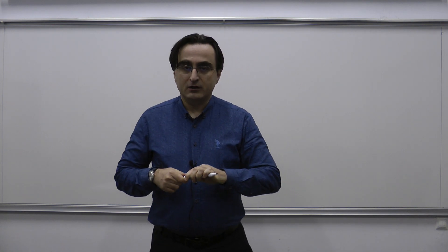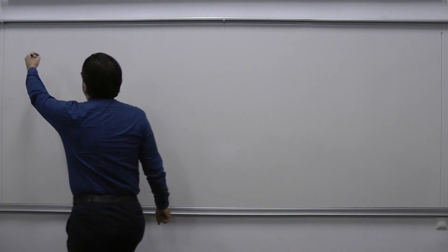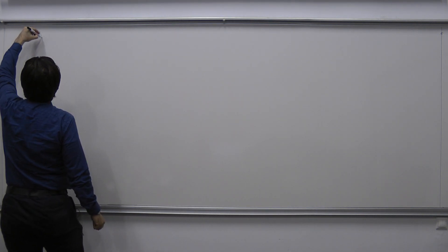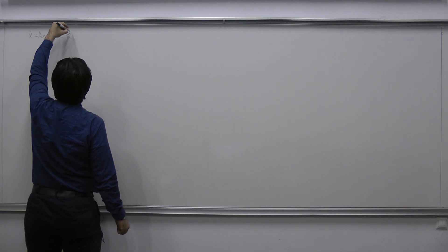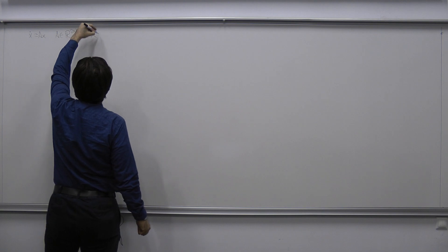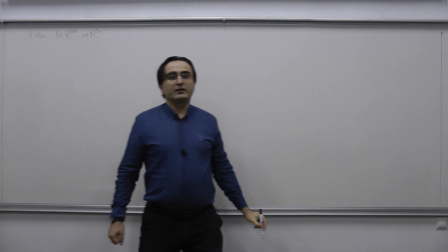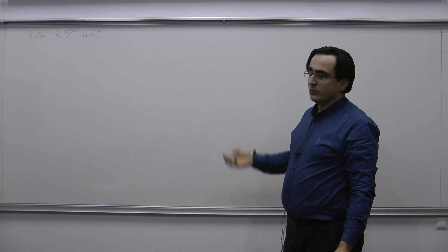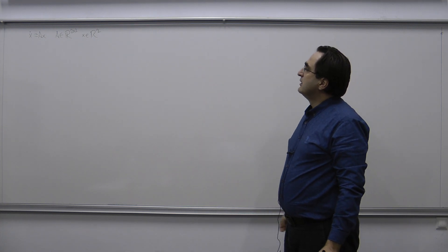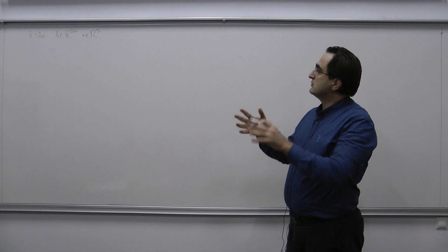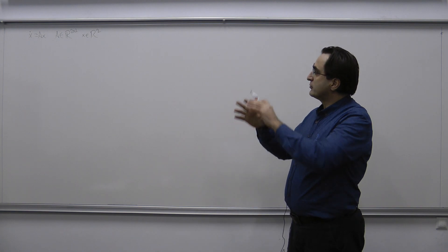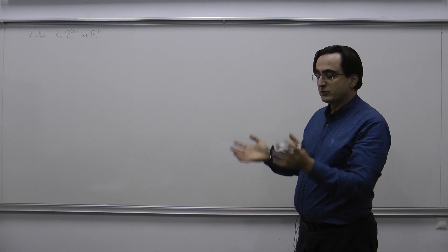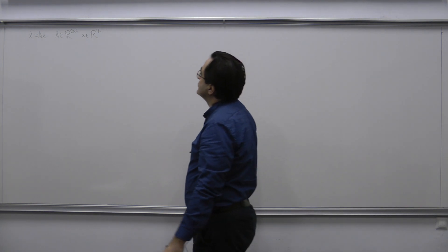In today's lecture, we're going to start by summarizing what we have done so far. We were given a linear system x-dot equal to Ax, where A is in R2×2, meaning x is in R2. We would like to classify the equilibrium points of the system with respect to the motion or the trajectories of the system around those equilibrium points.